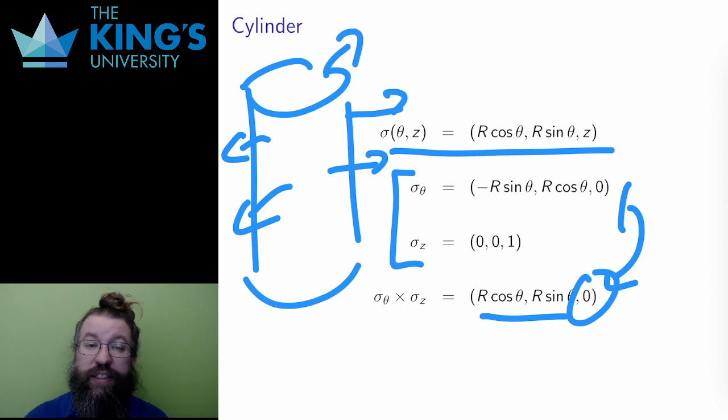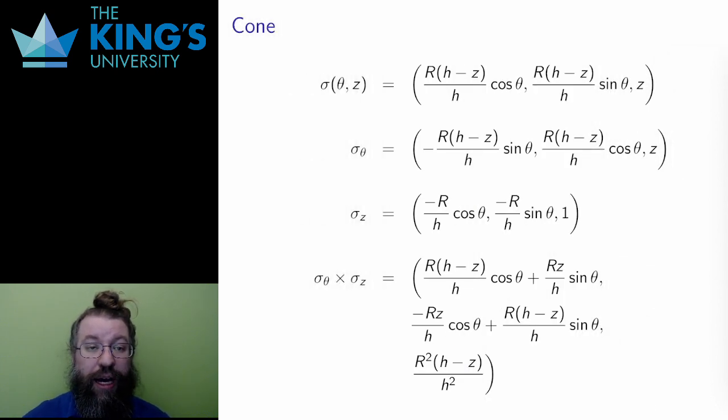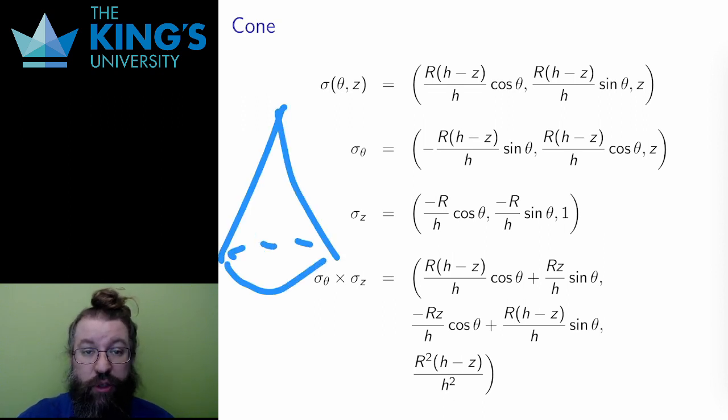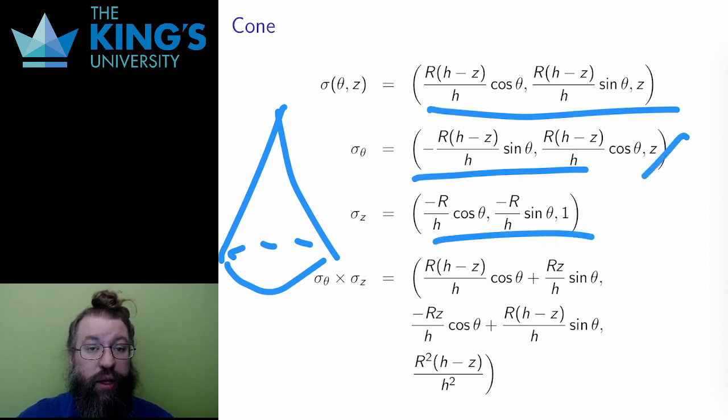Finally, here is the calculation for the cone. I'm not going to go too much into detail here, but the setup is the same. Write down the parametrization, calculate the partials in each parameter, and take the cross product. The calculations here are pretty complex, and the resulting vector is a little difficult to interpret.